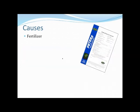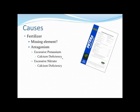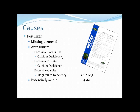The fertilizer itself can be a problem. Not all fertilizers supply all the elements — they're not all complete fertilizers. We need to make sure the symptom we're seeing doesn't coincide with an element that's missing from our fertilizer. There can also be antagonisms — some elements compete for uptake. If we have excess potassium, calcium deficiency can occur. If we have excess nitrogen, also calcium deficiency. If we have excess calcium, we can have magnesium deficiency. We want a potassium-to-calcium-to-magnesium ratio of 4:2:1 in our fertilizer mix to keep those in balance and avoid antagonisms.